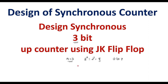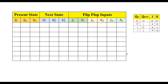The first step is to write the truth table. Since we are designing using JK flip-flops, we first need to write the JK flip-flop excitation table. The excitation table is the one where present state, next state, and inputs are present. Now with the help of this excitation table we need to write the truth table.